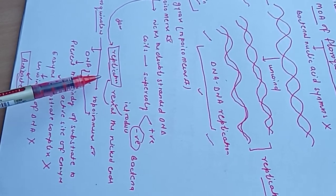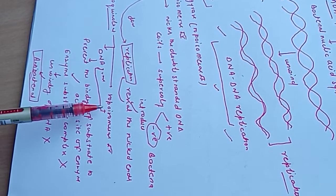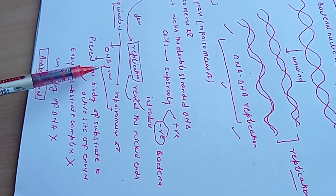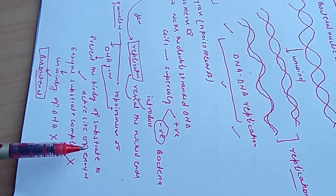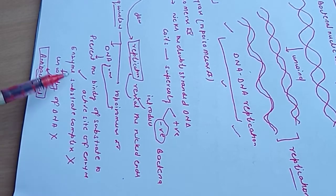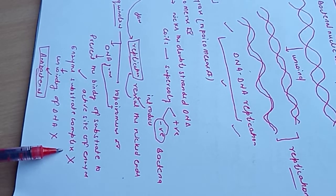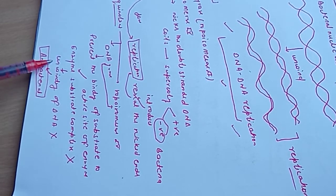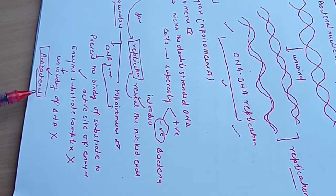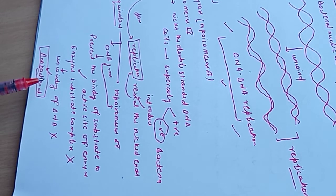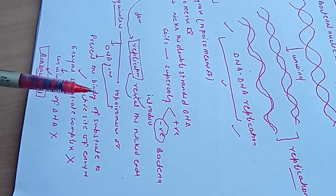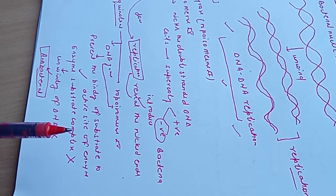Fluoroquinolones inhibit these enzymes — topoisomerase 4 and DNA gyrase. By inhibiting these enzymes, they prevent the binding of substrate to the active site; the enzyme-substrate complex will not form, and unwinding of DNA will not happen. If unwinding does not happen, it results in inhibition of replication as well as protein synthesis. This is the mechanism of fluoroquinolones. In the next videos I will discuss adverse effects, contraindications, and therapeutic uses. Thank you.